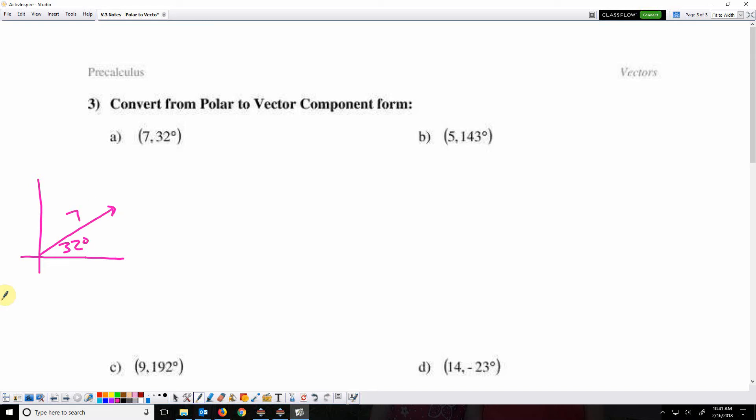So it looks about like that. Component form, I need to find the x and y components. So I'm going to turn that into a right triangle. Here's the vector's x component, and here is the vector's y component.